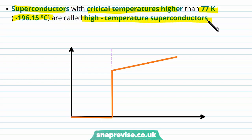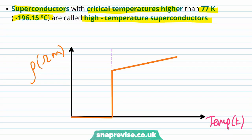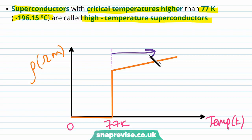Superconductors with critical temperatures higher than 77 Kelvin — minus 196.15 degrees Celsius — are called high-temperature superconductors. These have much higher critical temperatures than metallic superconductors.